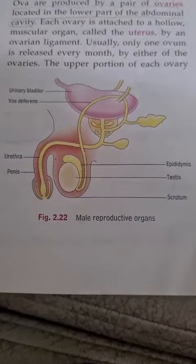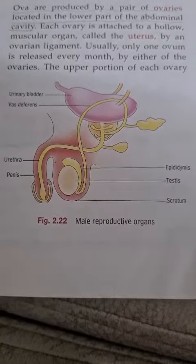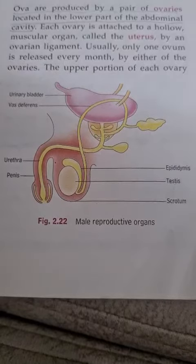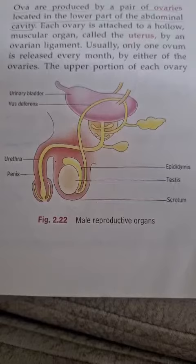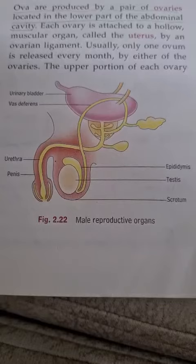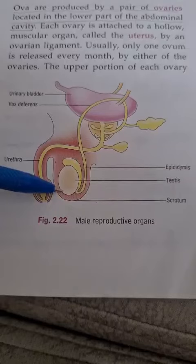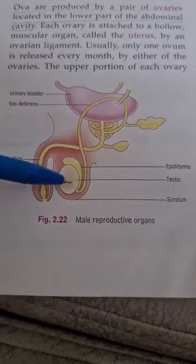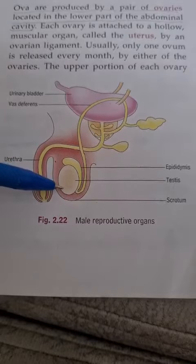The male reproductive system. The diagram shown here is of the male reproductive system in humans. Male gametes or male sex cells are called sperms. They are produced inside the testes, which are the essential part of the male reproductive system. One pair of testes is present in the male reproductive system.